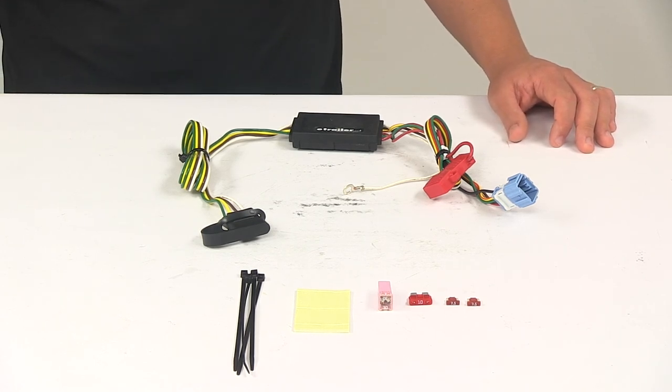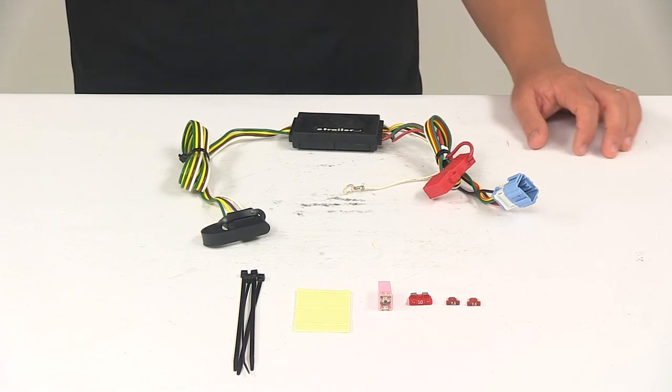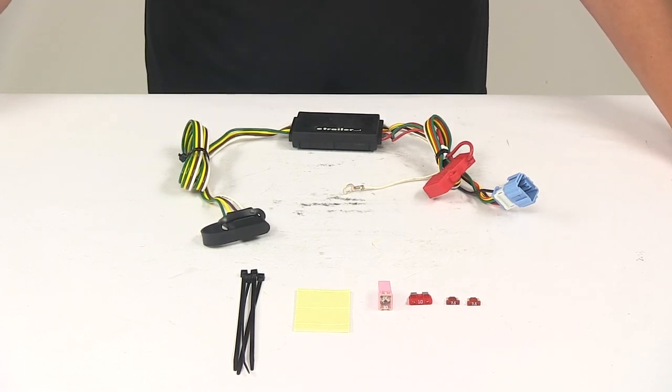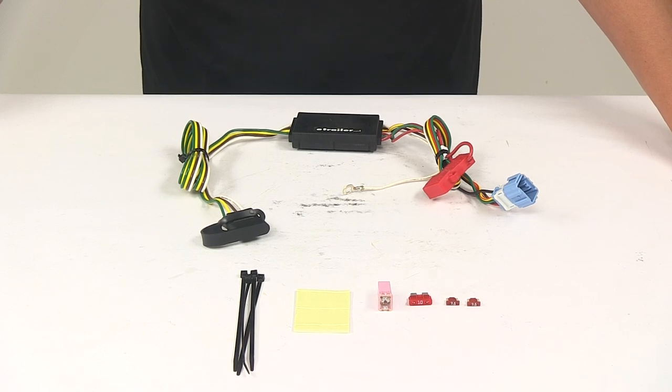When it comes to the maximum amperage for the stop and turn lights, we're looking at 3 amps per circuit. For the tail lights, 6 amps per circuit. That's going to do it for today's look at the Curt T-Connector Vehicle Wiring Harness with the four-pole flat trailer connector.